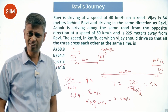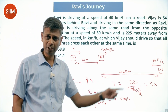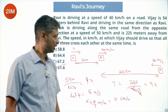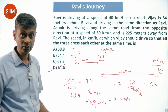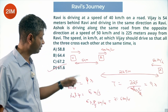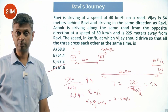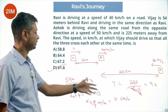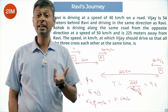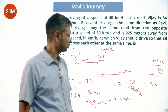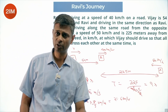This is a routine question. Relative distance divided by relative speed gives time taken; relative distance divided by time taken gives relative speed. The relative speed is 6 meters per second, which is 21.6 kilometers per hour. That much speed Vijay should be traveling higher than Ravi, so 40 plus 21.6 is 61.6 kilometers per hour.